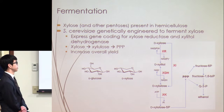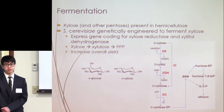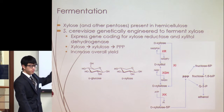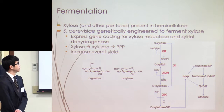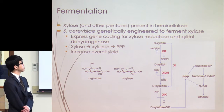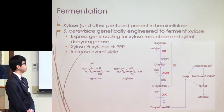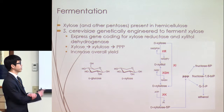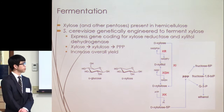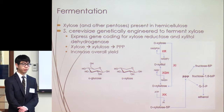Hemicellulose is also present in orange peels in a significant amount. Unlike cellulose, hemicellulose contains other sugars such as xylose — a five-carbon pentose sugar. Because xylose has only five carbons, yeast cannot naturally ferment it into ethanol. However, through genetic engineering, we can express two enzymes — XR (xylose reductase) and XDH (xylitol dehydrogenase) — allowing yeast to convert xylose into xylulose, which then enters the pentose phosphate pathway. This enables us to generate ethanol from both glucose and xylose, significantly increasing our overall yield.